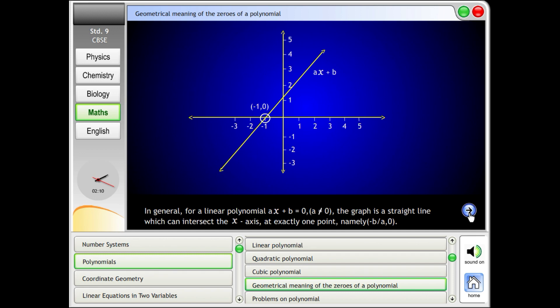In general, for a linear polynomial ax + b = 0, a ≠ 0, the graph is a straight line which can intersect the x-axis at exactly one point, namely (-b/a, 0).